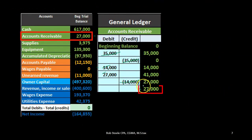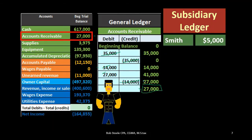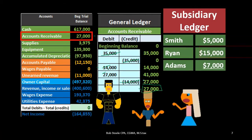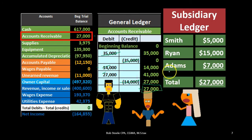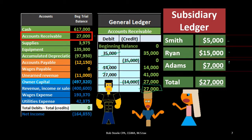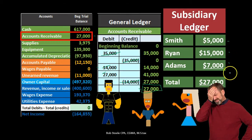Therefore, we need to get to the same data — the same $27,000 — not by date, but by subsidiary ledger, which is going to say something like: Smith owes us $5,000, Ryan owes us $15,000, Adams owes us $7,000. That's what gives us the $27,000. And then we can follow up with Smith, Ryan, and Adams about payment and go through there and track this. So note that this should always match what's on the general ledger and the trial balance.